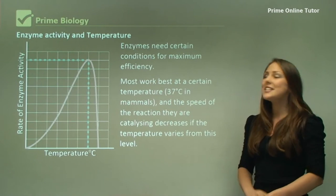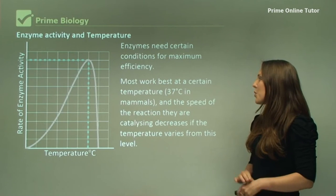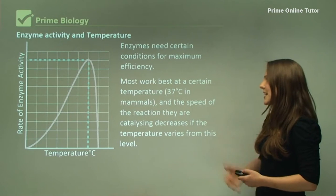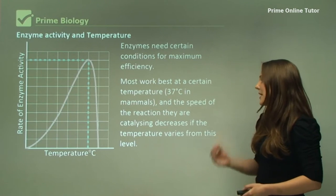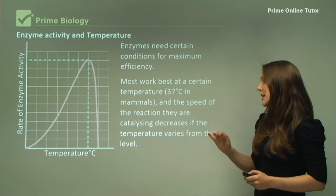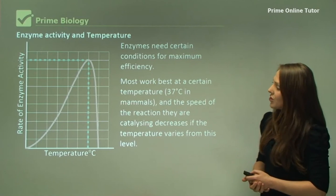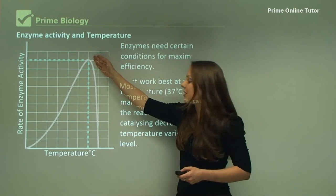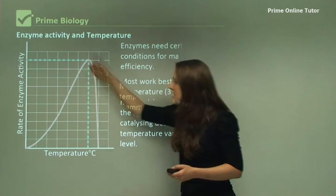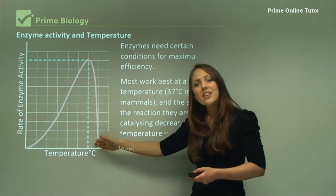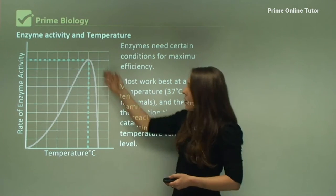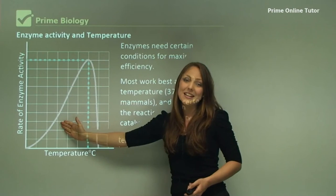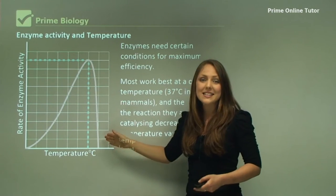Now enzymes need certain conditions for maximum efficiency. Most work best at a certain temperature. In humans it's around 35 to 40 degrees, around 37 degrees in mammals. And the speed of the reaction they are catalyzing decreases if the temperature varies from this range. And that's shown in this diagram here. We have a specific range and this is the increased rate of reaction. With temperature outside this rate you can see a dramatic decline when the temperature increases. When the temperature decreases you can see that the rate of the enzyme working does decrease as well but not as dramatically as excessive heat.